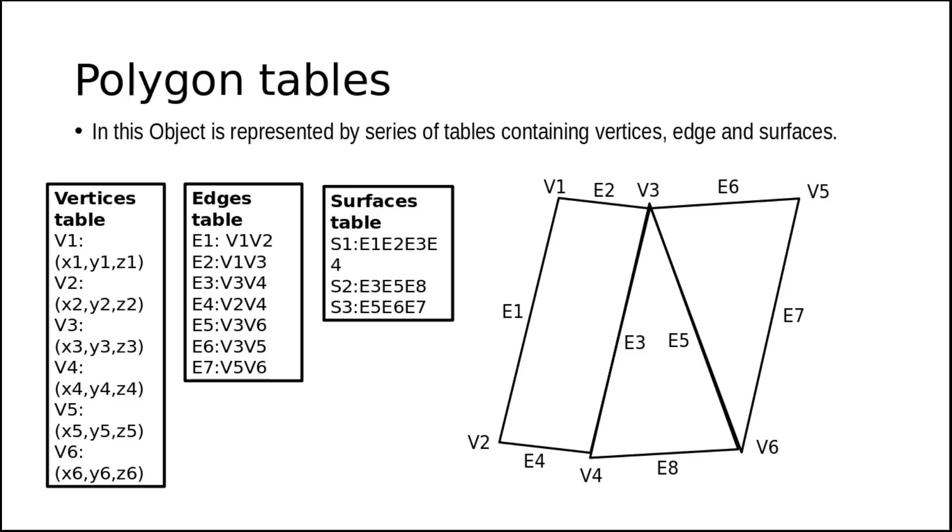First is polygon tables. In this particular method, the object is represented by a series of tables containing vertices, edges, and surfaces. Suppose these are the polygons representing some object. The first table will indicate vertices, the second will be edges, and the third will be surfaces.